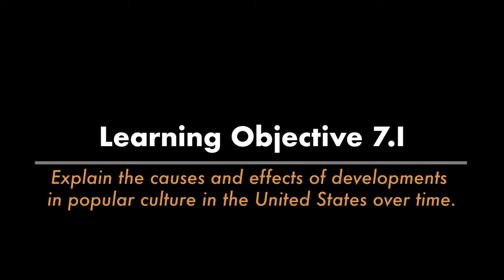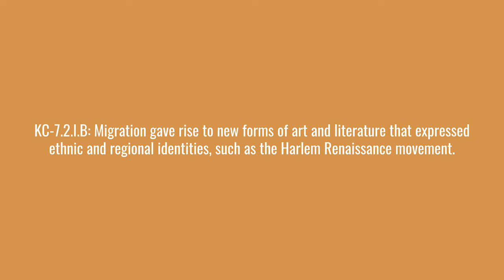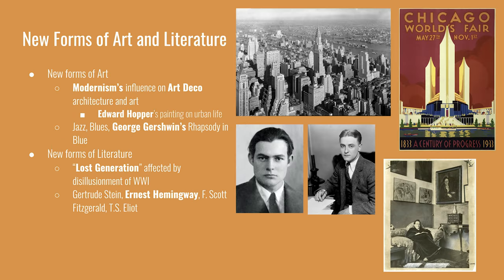The next learning objective is to explain the causes and effects of the development of popular culture in the United States over time. The first key concept covers art and literature. The 1920s movements were driven by modernism — the idea that moving forward requires leaving all traditional forms of thought and art behind. The main art form was the art deco movement, present in art and architecture. The Chrysler Building in New York City is a great example of art deco architecture, emphasizing geometric curves and shapes. The style was associated with luxury and glamour, fitting a decade of large economic expansion.